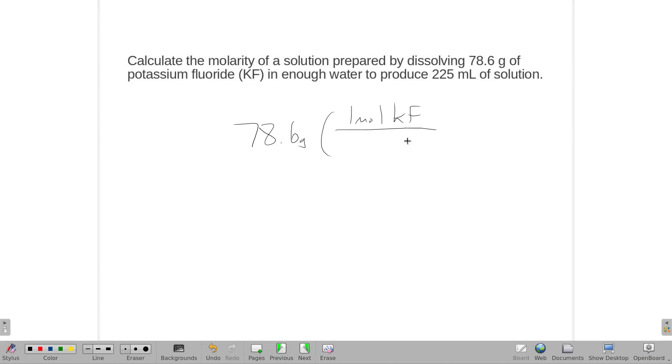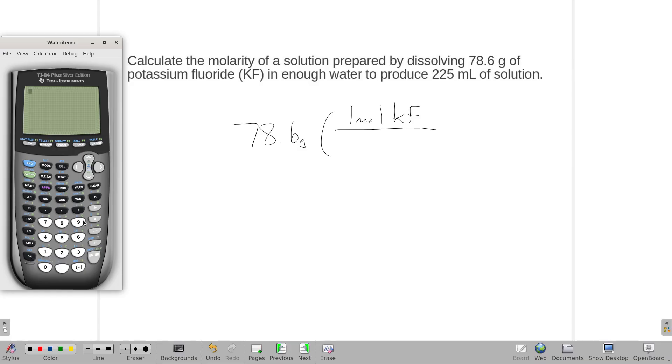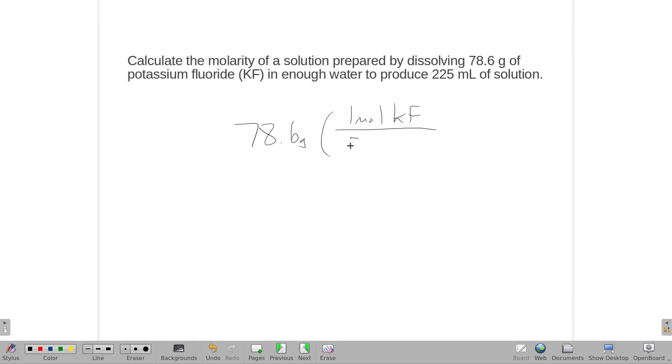and a mole of potassium fluoride weighs, let's see, potassium is 39.10, and fluoride is 19.00. So potassium fluoride is 58.10 grams,